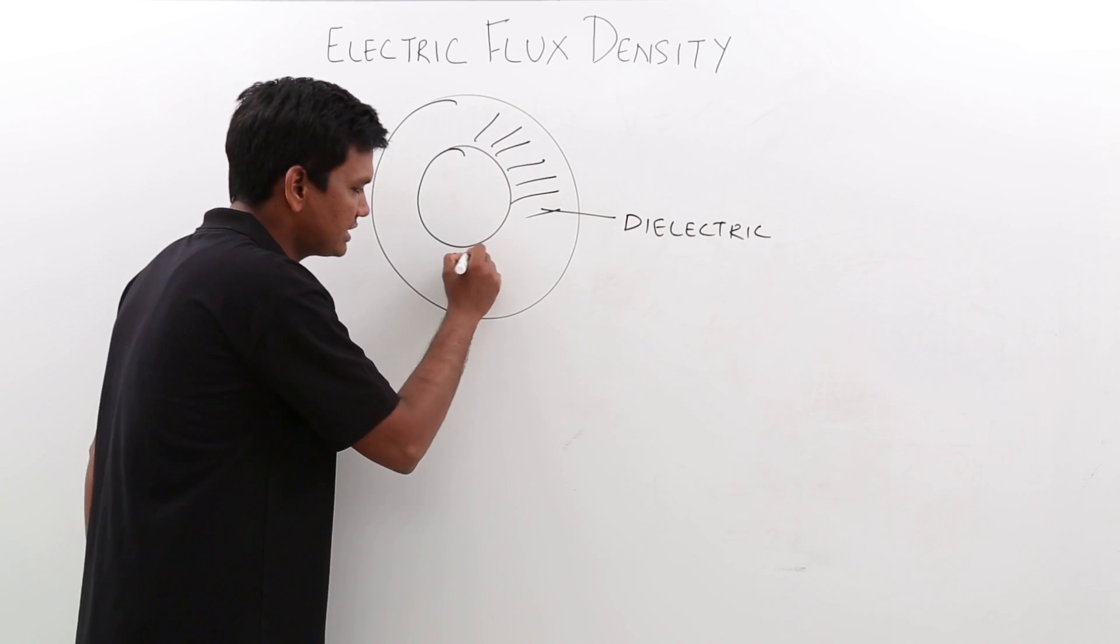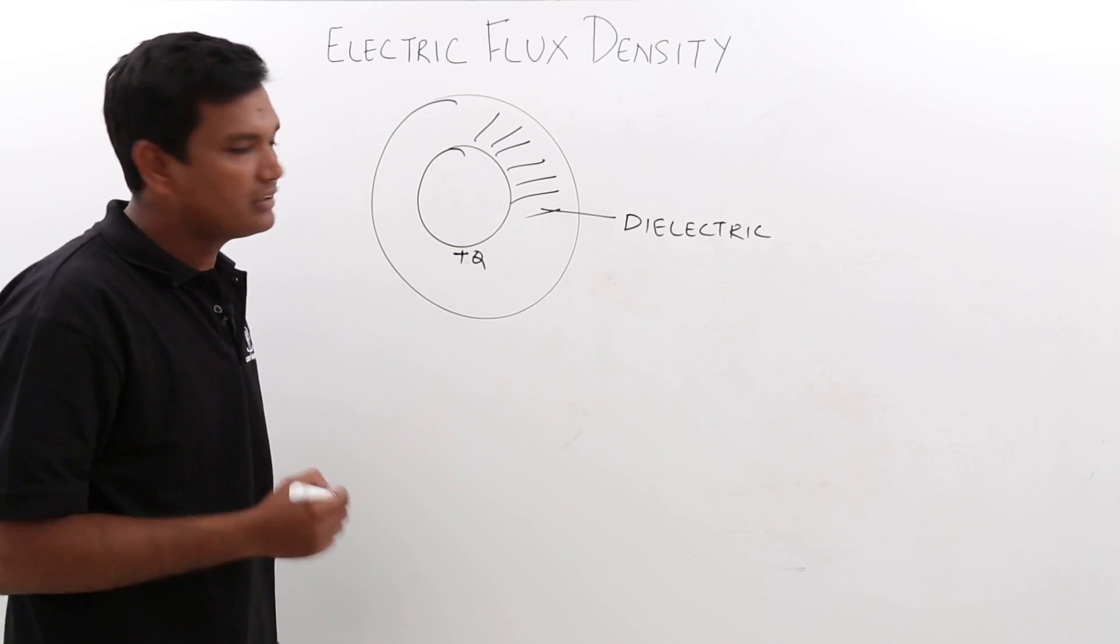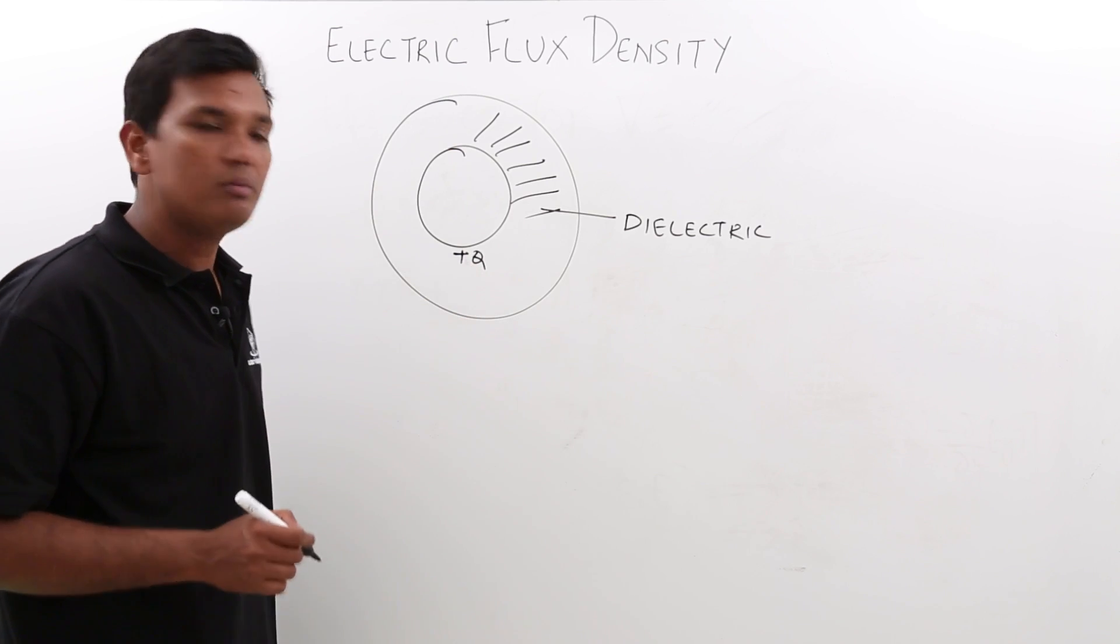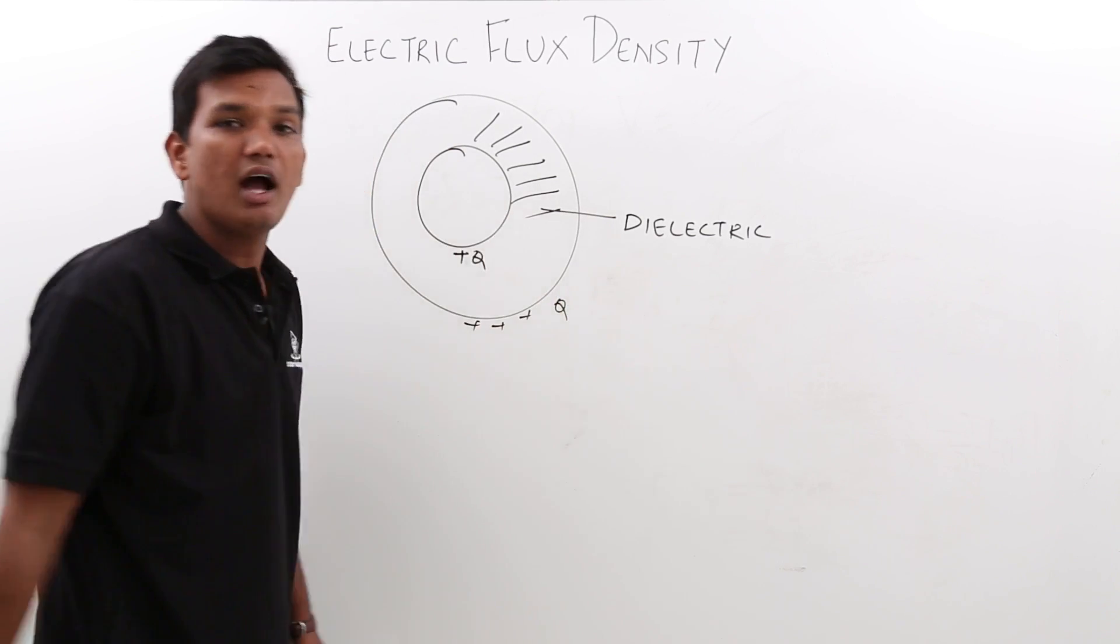What he has done is he has given a charge plus q to the inner sphere. After some time, what he observed is this charge is uniformly distributed over the outer sphere.